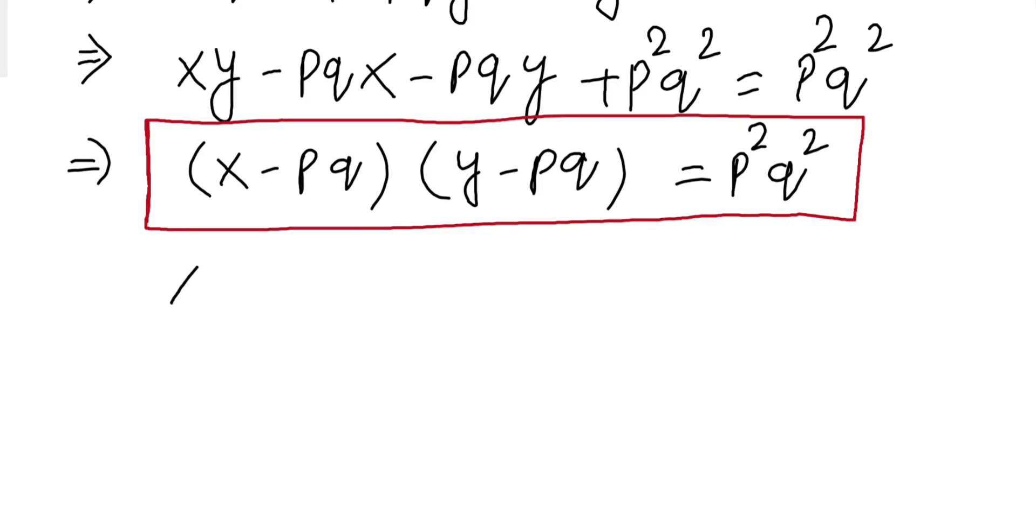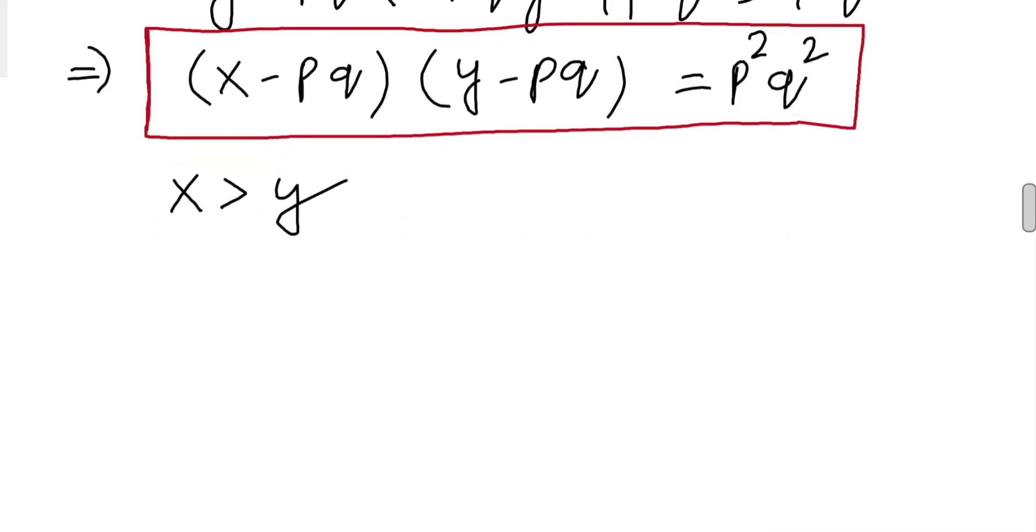Now, as we have assumed that x is greater than y, therefore x minus pq is greater than y minus pq.